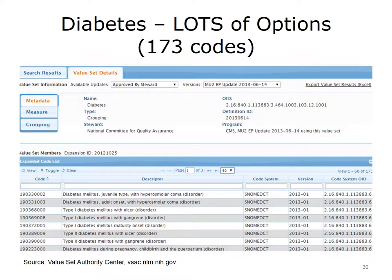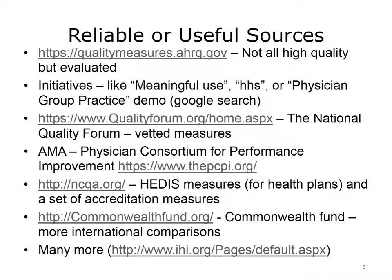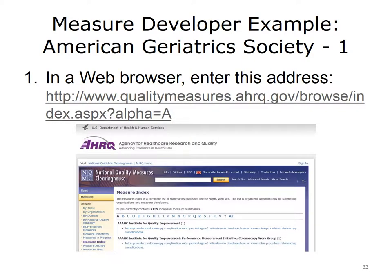Here is another example: the broad definition of diabetes used in several measures, where 173 codes from three different taxonomies may be used. There are a number of useful sources to check for measure specifications, including many organizations that develop measures. The Commonwealth Fund has measures that compare healthcare systems across countries, helpful for understanding how other countries promote healthy populations. One example is the American Geriatric Society, focused on the needs of older adults — you can find this by searching the National Quality Measures Clearinghouse.